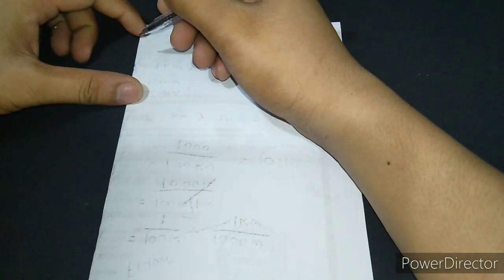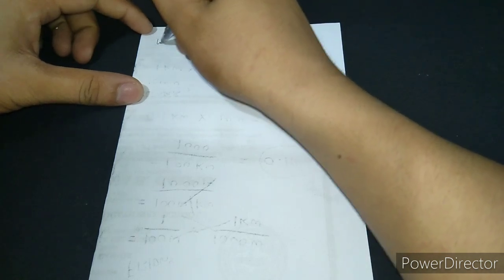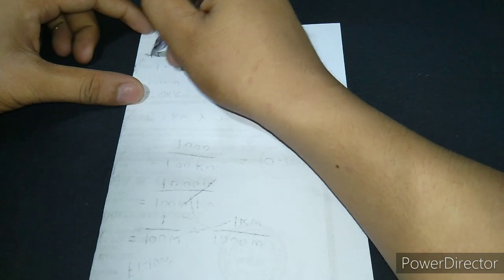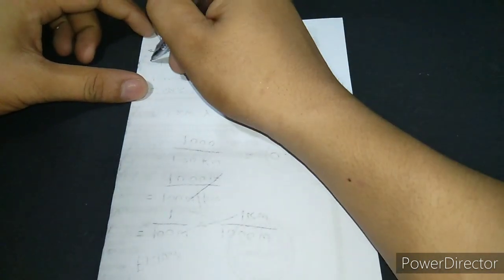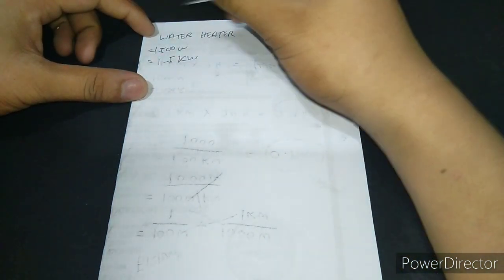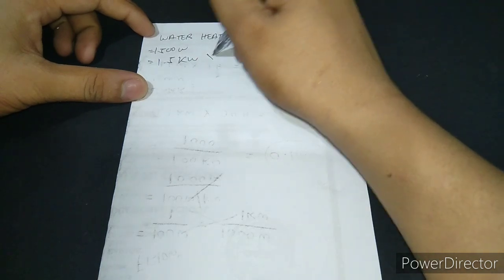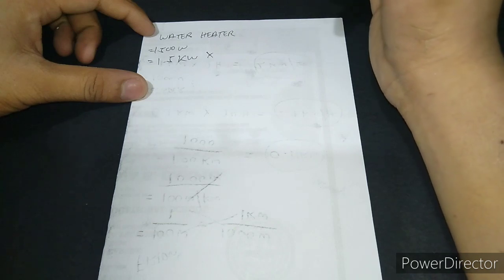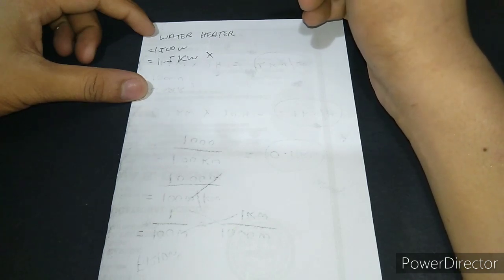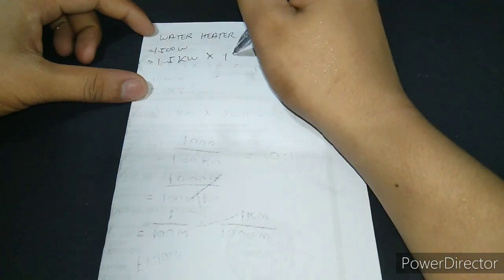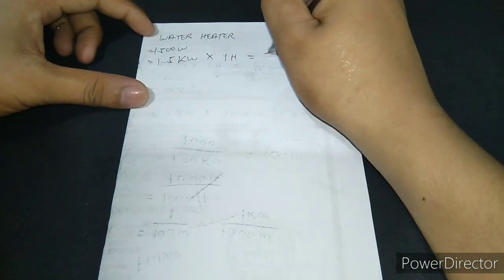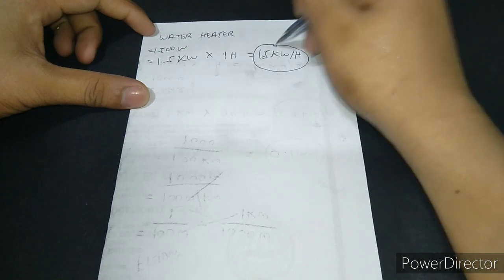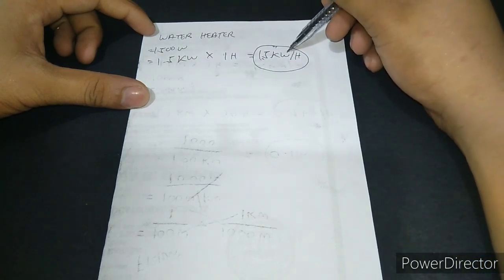Now for the third appliance, for example, let's say you have a water heater rated at 1500 watts, which will be converted into 1.5 kilowatts. Again, we will multiply the kilowatt by the number of hours we use it each day. Usually we only use our heaters for an average of about 1 to 2 hours. Let's assume we use it for only 1 hour a day. So it's equivalent to 1.5 kilowatt hours per day. That is our daily consumption of our water heater.